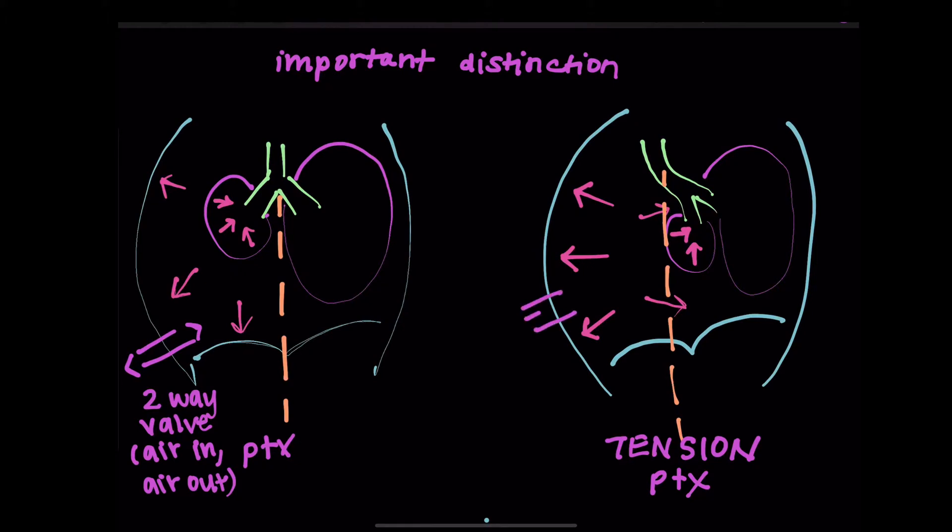However, in a tension pneumothorax, it's a one-way valve. So air is going to come in from the outside, but it's not going to be able to go back out for whatever reason. And this can get really dangerous, because that just means you get increased pressure and increased pressure and increased pressure inside the chest such that it's going to push over your mediastinum, and it can actually cause the heart to have issues pumping blood.